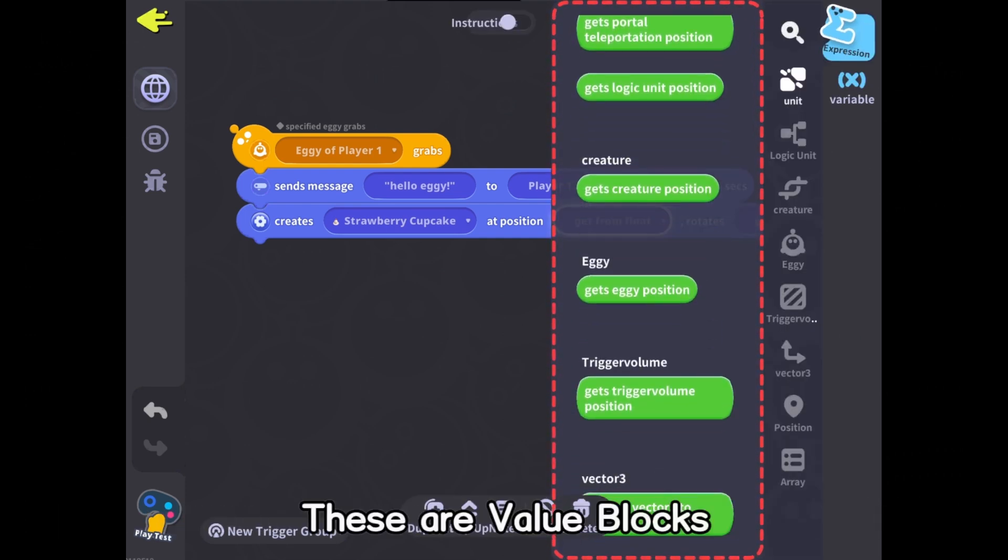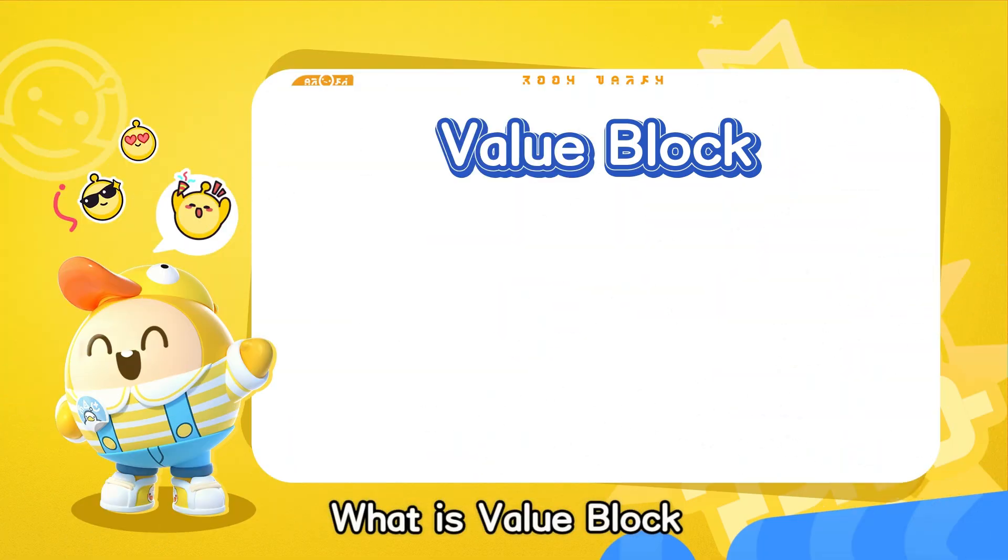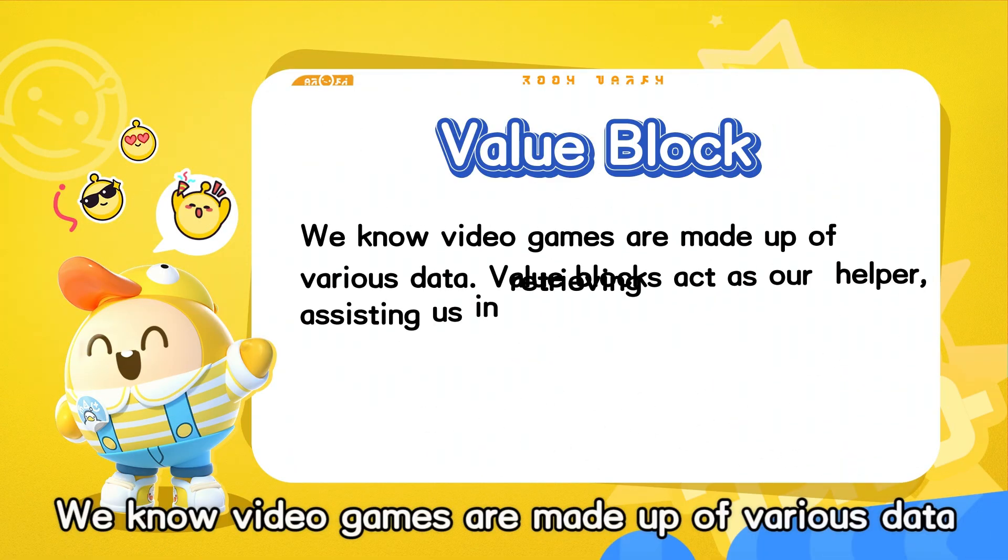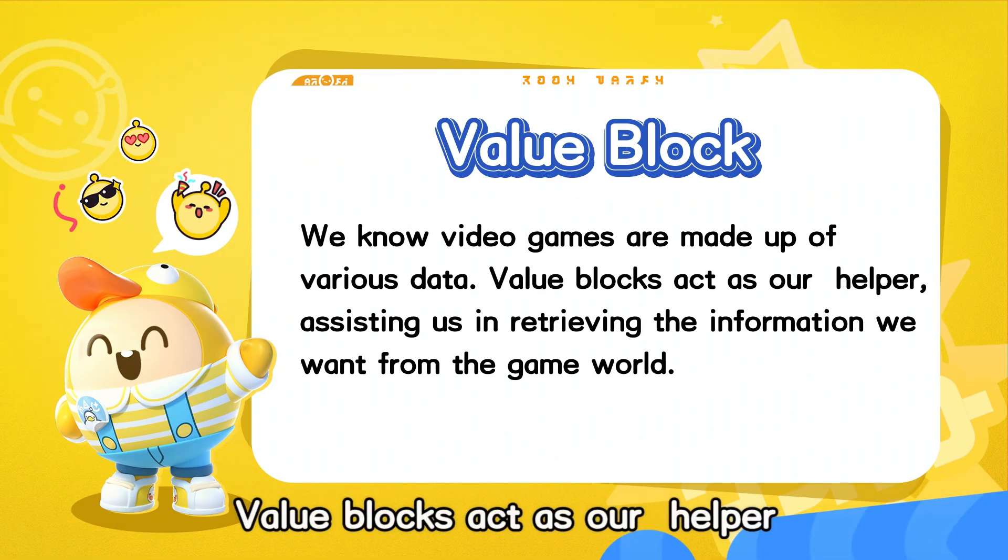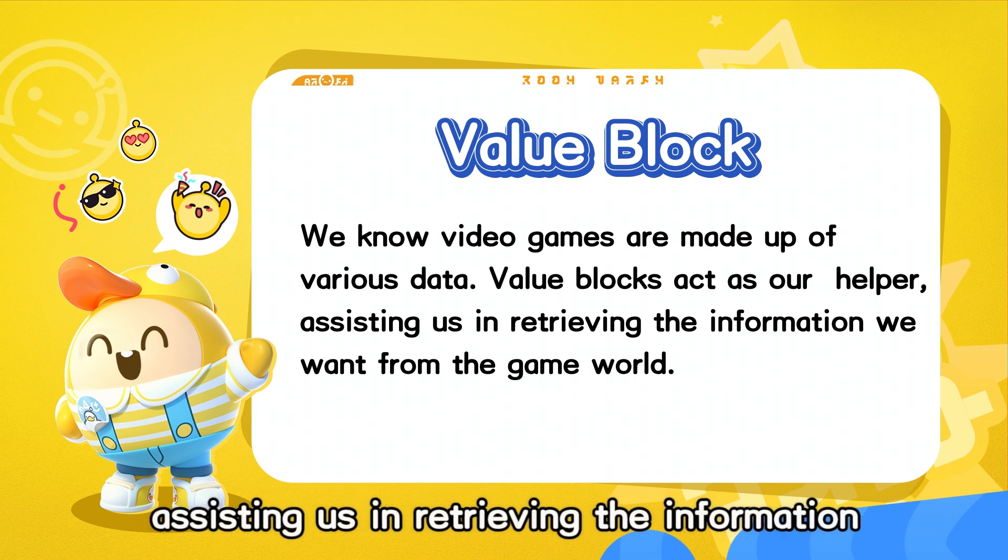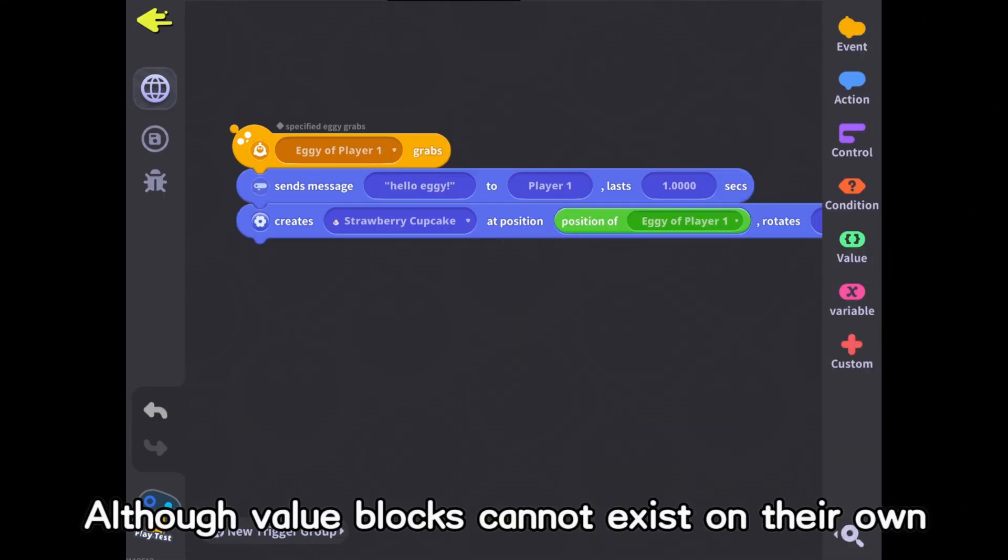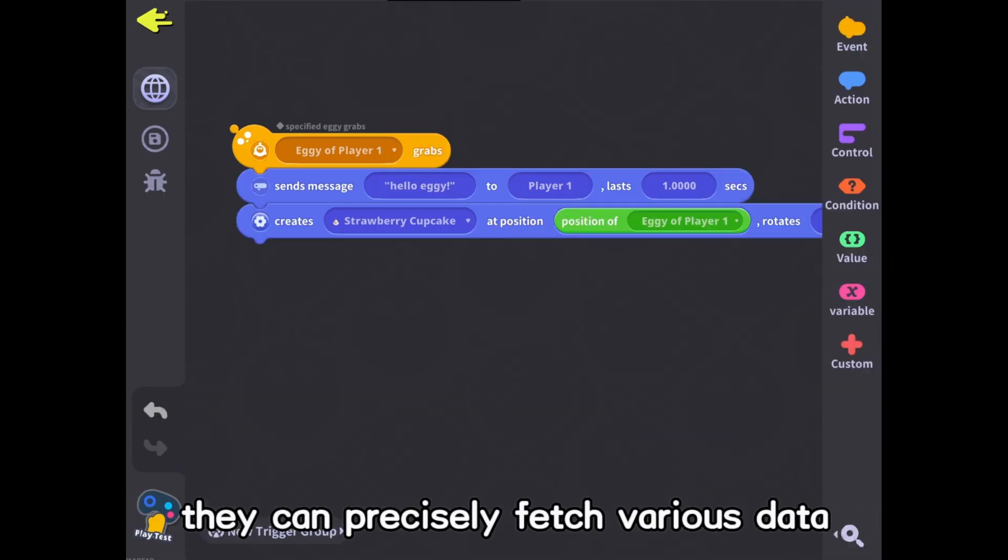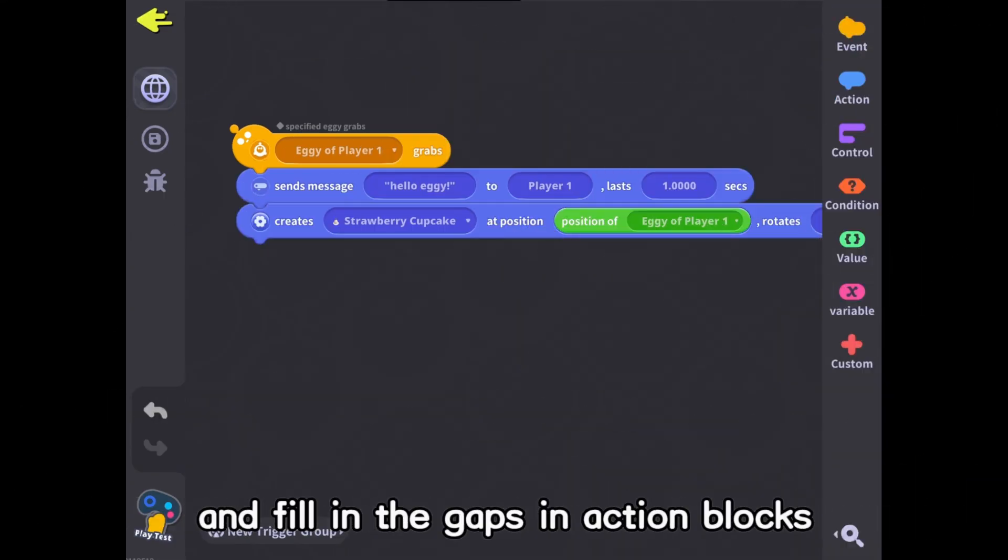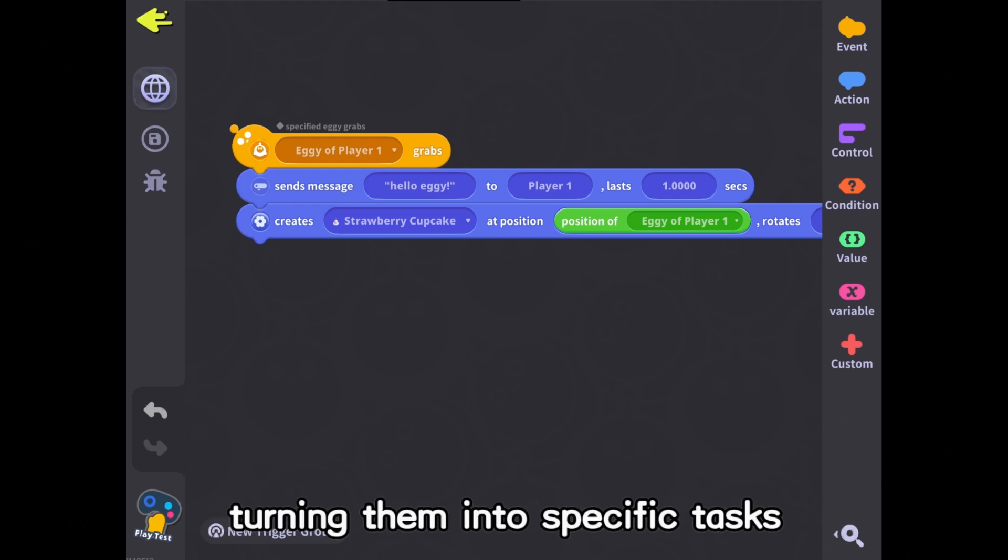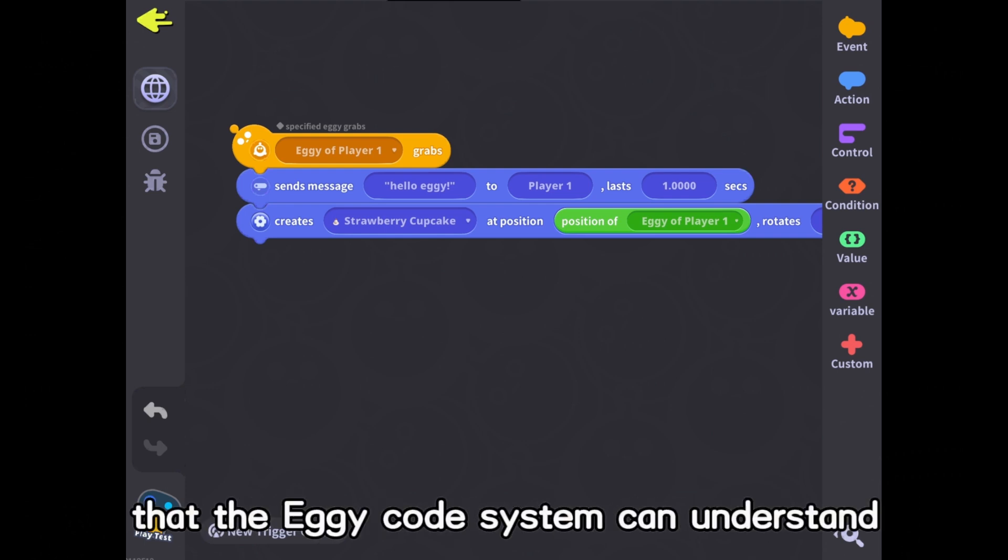What is a value block? We know video games are made up of various data. Value blocks act as our helper, assisting us in retrieving the information we want from the game world. Although value blocks cannot exist on their own, they can precisely fetch various data and fill in the gaps in action blocks, turning them into specific tasks that the Eggie code system can understand.